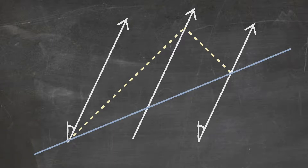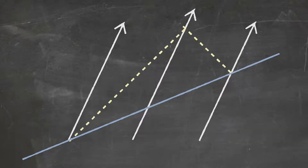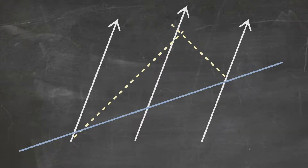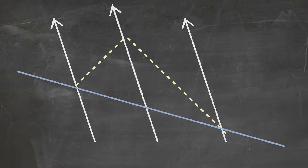For an observer moving to the right, the hypersurface of simultaneity tilts to the right. And for an observer moving to the left, the hypersurface of simultaneity tilts to the left. This means that the moving observer judges simultaneity to be totally different than the Earth observer.